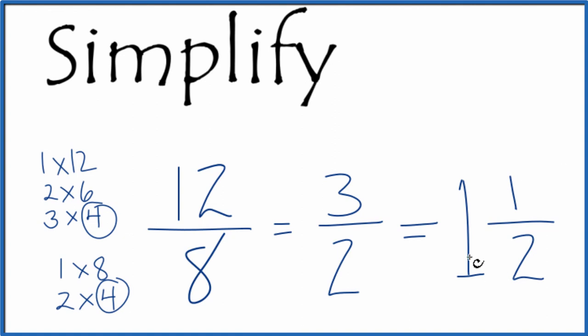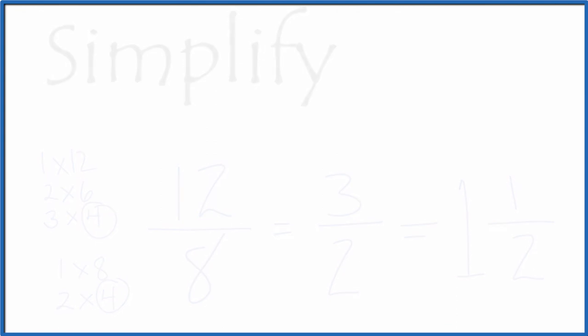You can check that: 1 times 2 is 2, plus 1 gives us 3, so 3 over 2 — just like we have here. This is Dr. B, simplifying the fraction 12 over 8, and thanks for watching.